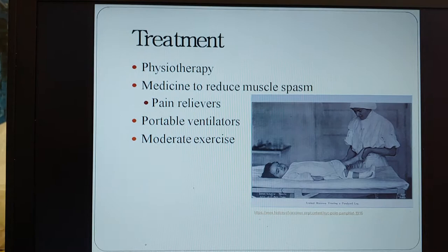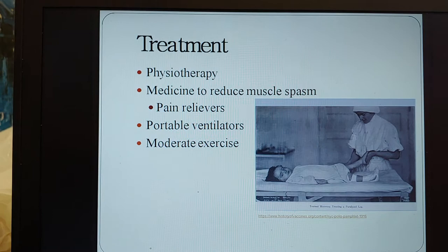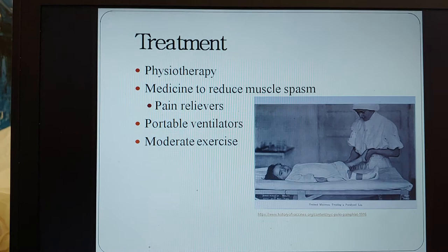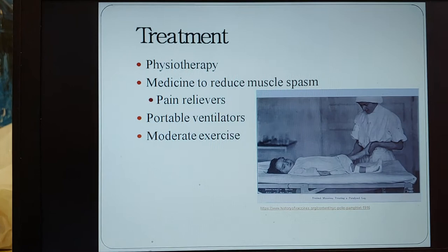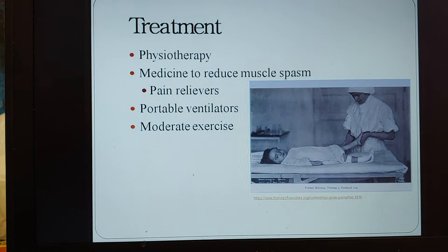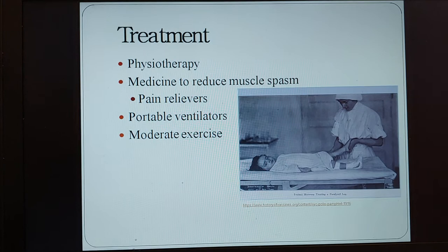Different treatments include physiotherapy — working muscle groups to keep them strong — medicines to reduce muscle spasms, and pain relievers. Portable ventilators are also available, replacing the iron lung, to help with breathing in the early stages of polio. Moderate exercise is recommended to prevent deformity and loss of muscle function.